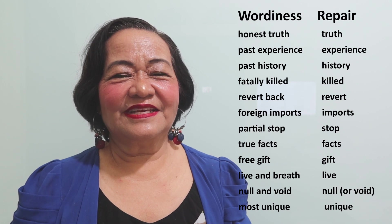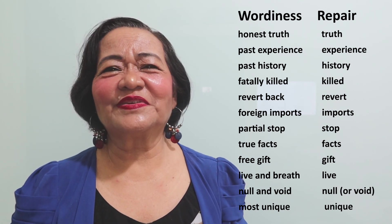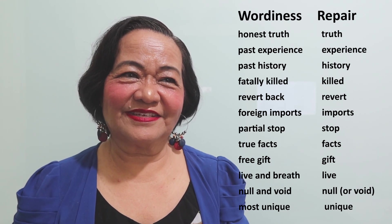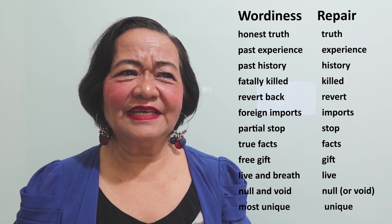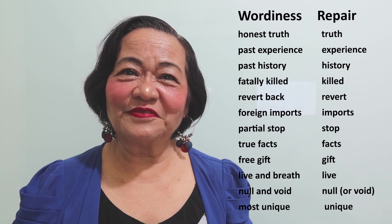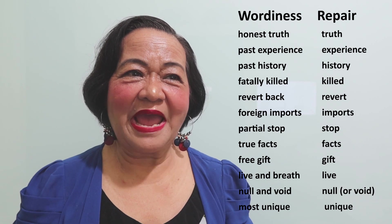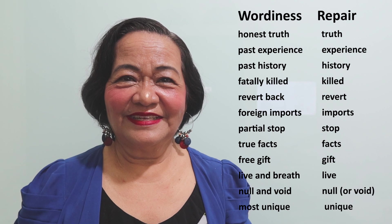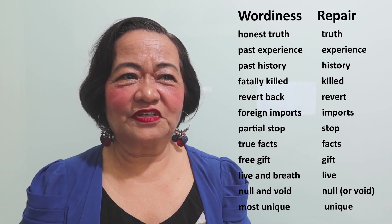Next is 'past history.' Again, history is past, so it is adequate to say 'history.' Next, 'fatally killed' — killed is sufficient. 'Revert back' — this is repetition, so just say 'revert.'